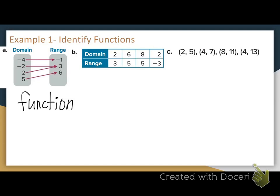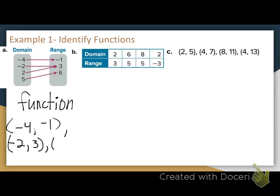A student asked how you know if it's a function. A mapping creates ordered pairs for me — each x value is paired with a y value. I can list out my ordered pairs: negative 4, negative 1; negative 2, 3; 2, 3; 5, 6. Based on your ordered pairs, do we have any repeating x values? No. I only have one of each x value — they're not repeating, so this is considered a function.